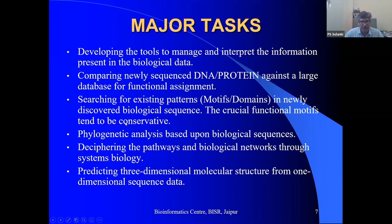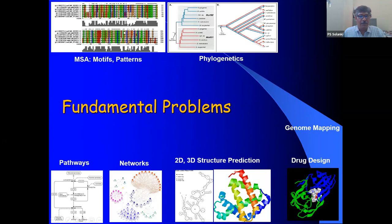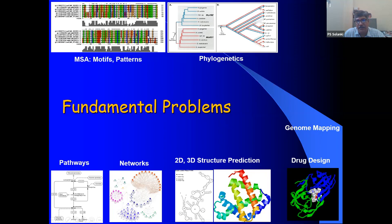Predicting three-dimensional structure from one-dimensional sequence data is a key bioinformatics task. The fundamental problem in bioinformatics includes the multiple sequence alignment problem, which we use to identify conserved regions, for pattern identification and multiple final applications. After performing multiple sequence alignment, we can create a phylogenetic tree to look at the course of evolution and how sequences have evolved.